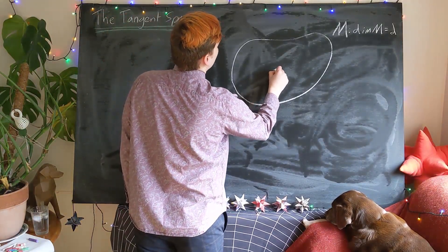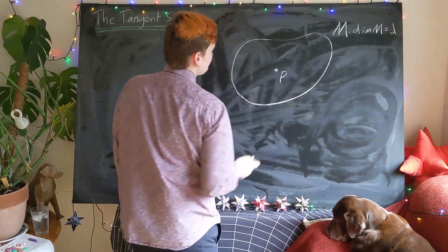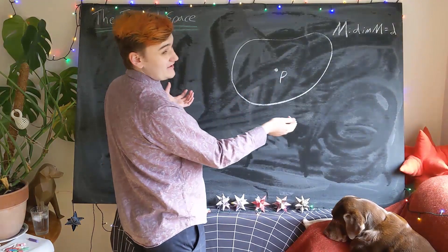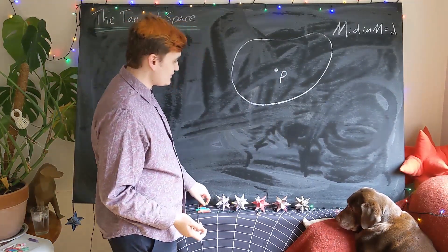So we begin by choosing a particular point in the manifold, I'll call it P. Then we essentially want to construct the vector space around that point P. So how do we actually go about doing that?